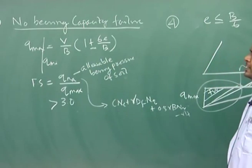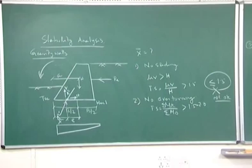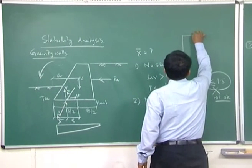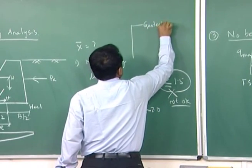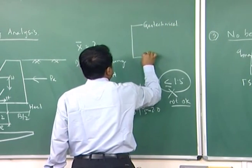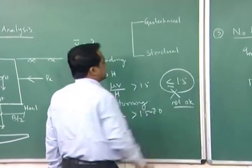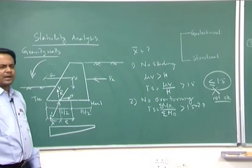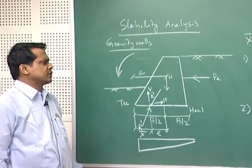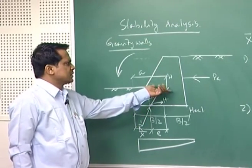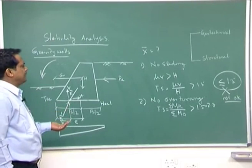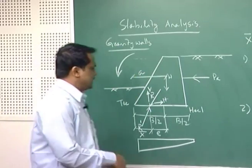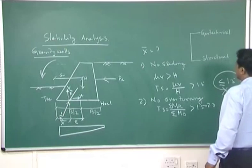Once stability analysis is satisfied, you proceed to structural design. There are two parts of retaining wall design: geotechnical and structural. In the geotechnical part, you must first satisfy all four stability criteria. For gravity retaining walls, structural design is not needed. But for reinforced concrete retaining walls such as cantilever or counterfort walls, structural design is required.